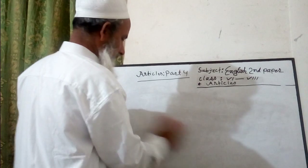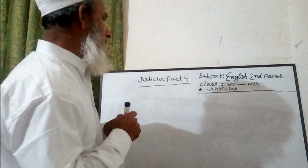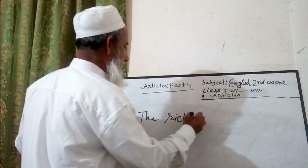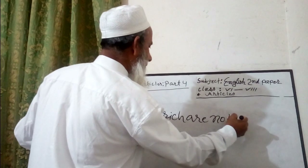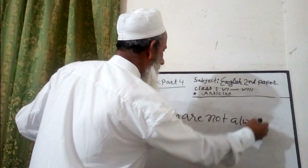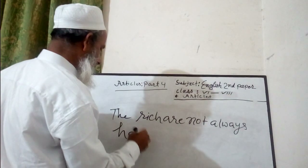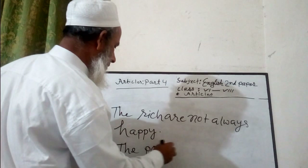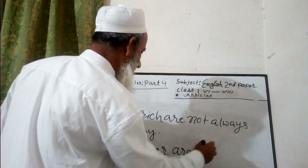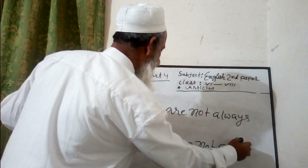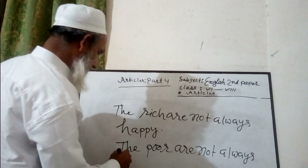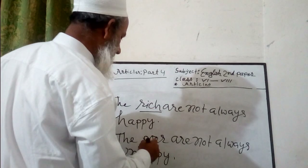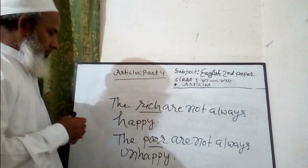We can also use 'the' before an adjective that denotes a whole class of people. For example, 'the poor' — this refers to the poor as a whole class of people. So before such adjectives, we use 'the'.